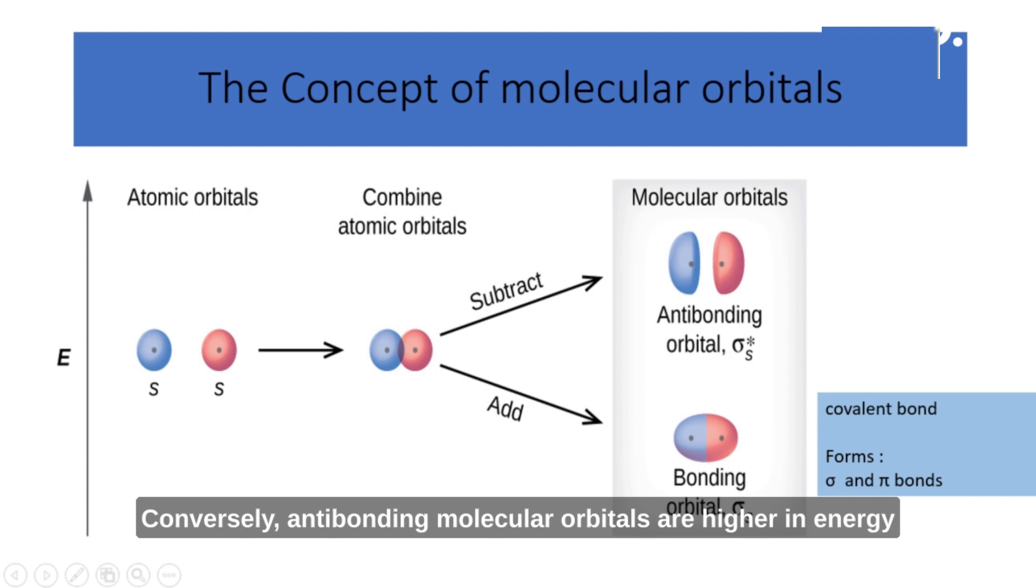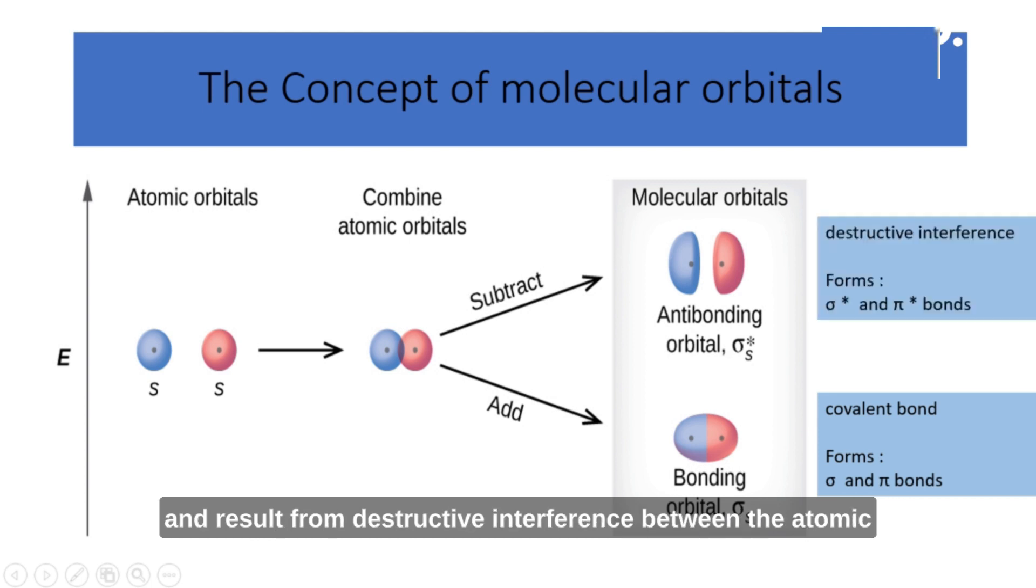Conversely, anti-bonding molecular orbitals are higher in energy and result from destructive interference between the atomic orbitals, leading to regions of electron density that weaken the bond between the atoms. These are known as sigma star and pi star.